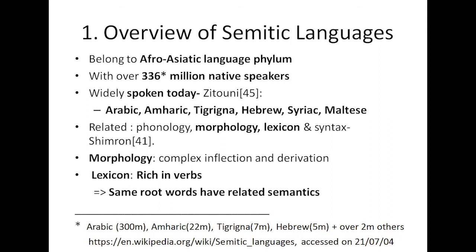The overview of Semitic Languages highlights key points on classes of alphabetic language phylum that this language group belongs to. Currently, native speakers are estimated to be over 360 million. Widely spoken languages today include Arabic, Amharic, Tigrinya, Hebrew, Syriac, and Maltese, in that order by population size. They are related in phonology, morphology, lexicon, and syntax, with a focus on morphology and lexicon as most relevant to this paper.